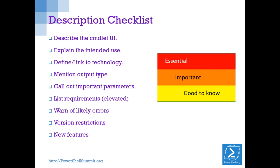What you want to think about is: if someone approaches your cmdlet or function, what do they need to know? Start with what does it do, how does it work, what does it return, and what does the user need to gather in advance in order to use it. These all go into the description. The synopsis comes later because it's a summary — you can't summarize what you haven't written.